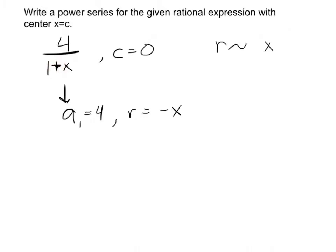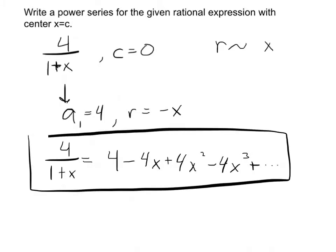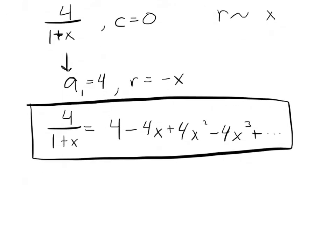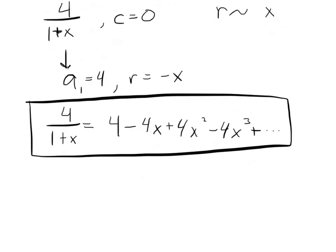So because of that, I conclude that 4 over 1 plus x is equal to 4 minus 4x plus 4x squared minus 4x to the third, and so on. Now, again, this is only true on the interval of convergence, but fair enough. They are equal to one another on the interval of convergence. Now, and I hope I can fit this on the screen, I want to slightly modify the problem.